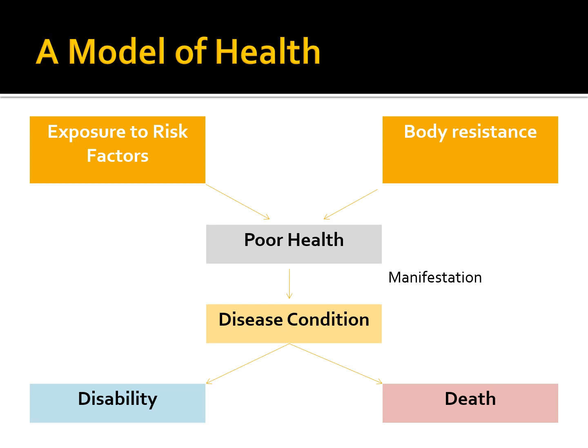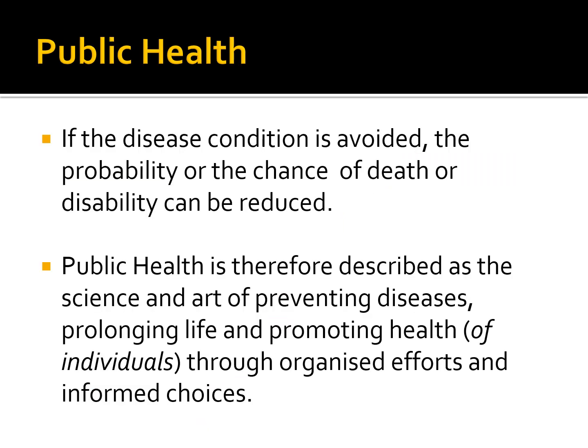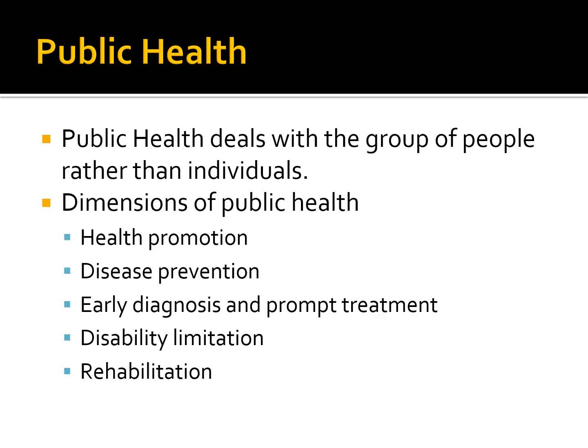For our model of health, exposure to risk factors and a failure of body resistance could bring about poor health and eventually bring about disease. This would either bring about recovery, disability, or death — the key outcomes of illness. If the disease condition is avoided, the probability of death or disability can drastically be reduced. Public health is therefore described as the science and art of preventing diseases, prolonging life, and promoting health through organized efforts and informed choices. It deals with a group of people rather than individuals.